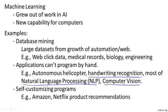Learning algorithms are also widely used for self-customizing programs. Every time you go to Amazon or Netflix or iTunes Genius and it recommends new movies, products, or music to you, that's a learning algorithm. If you think about it, if you have a million users, there's no way to write a million different programs for your million users. The only way to have software give these customized recommendations is if it can learn by itself to customize itself to your preferences.